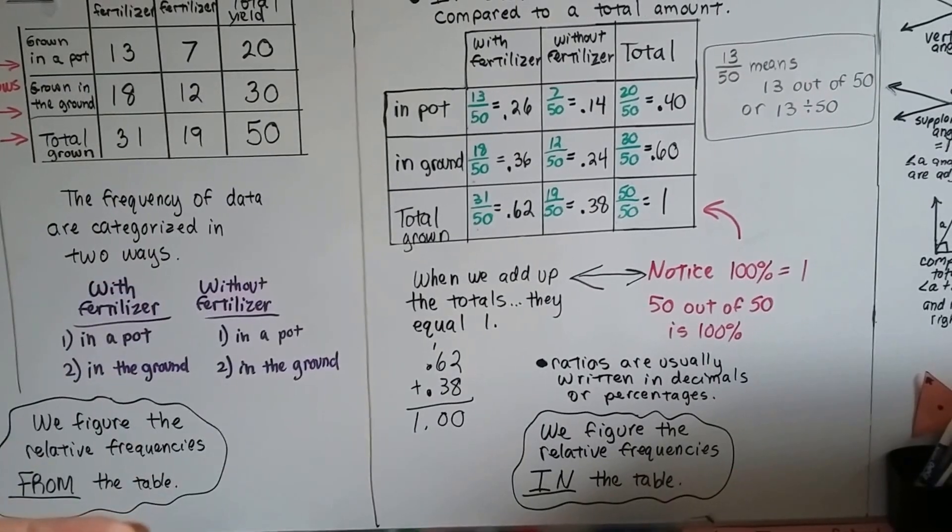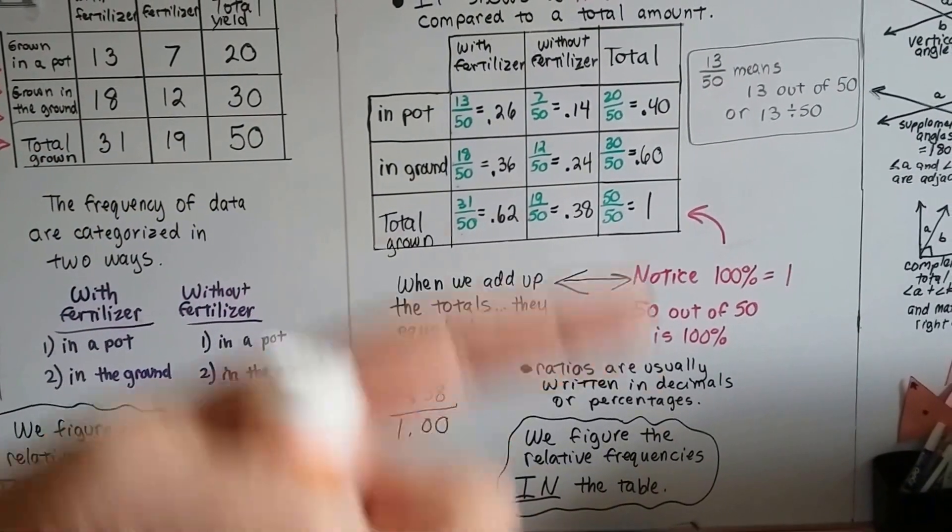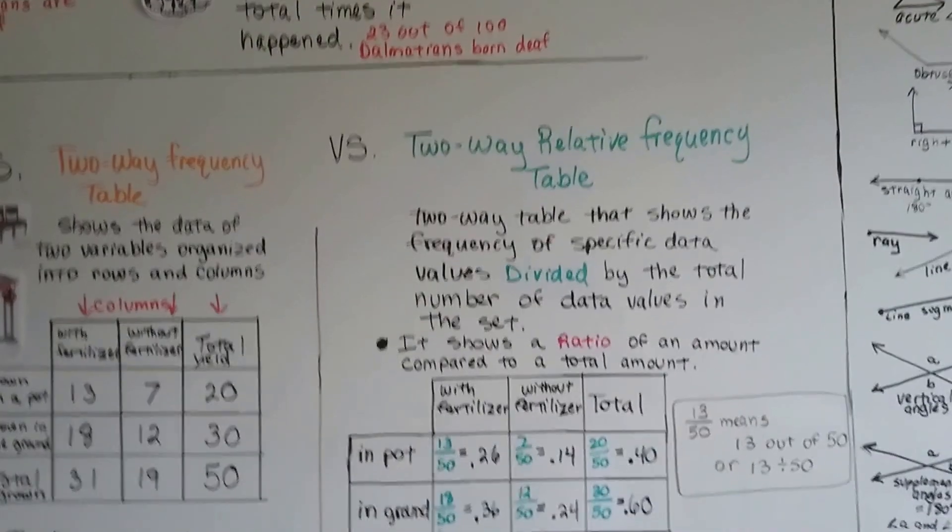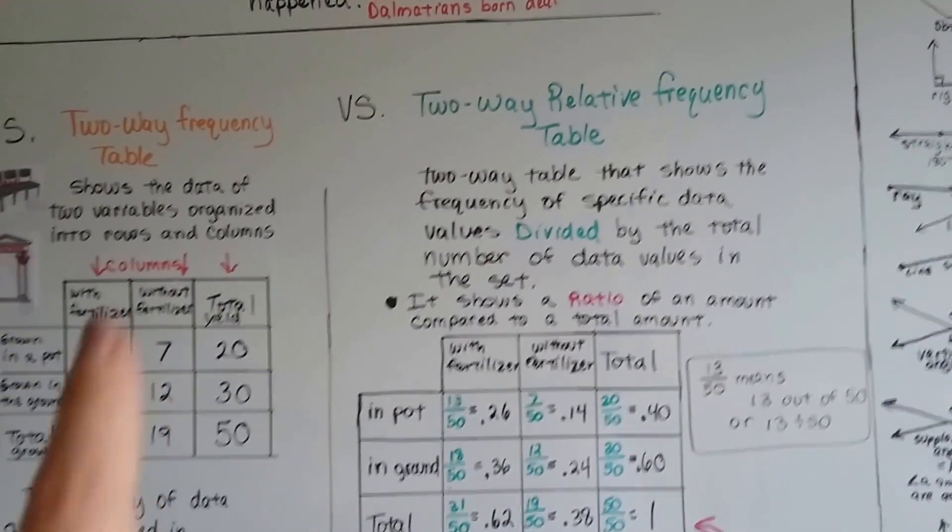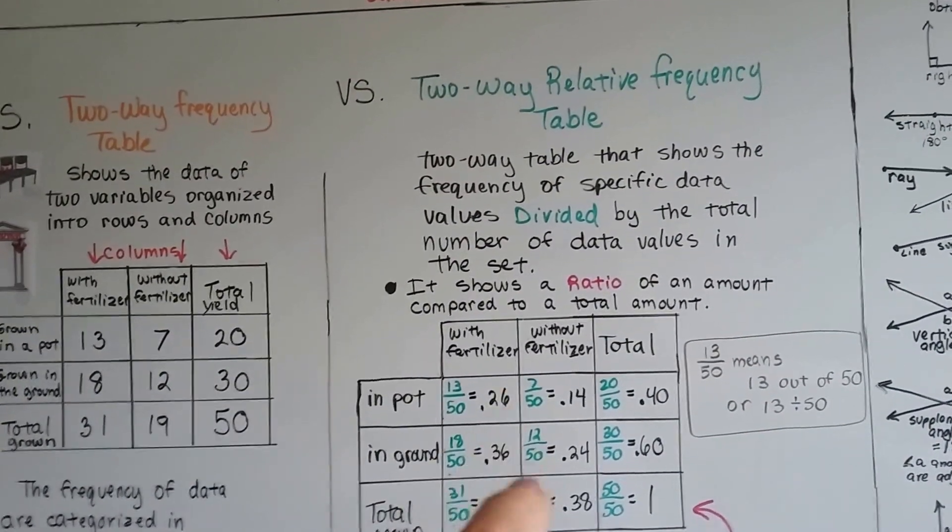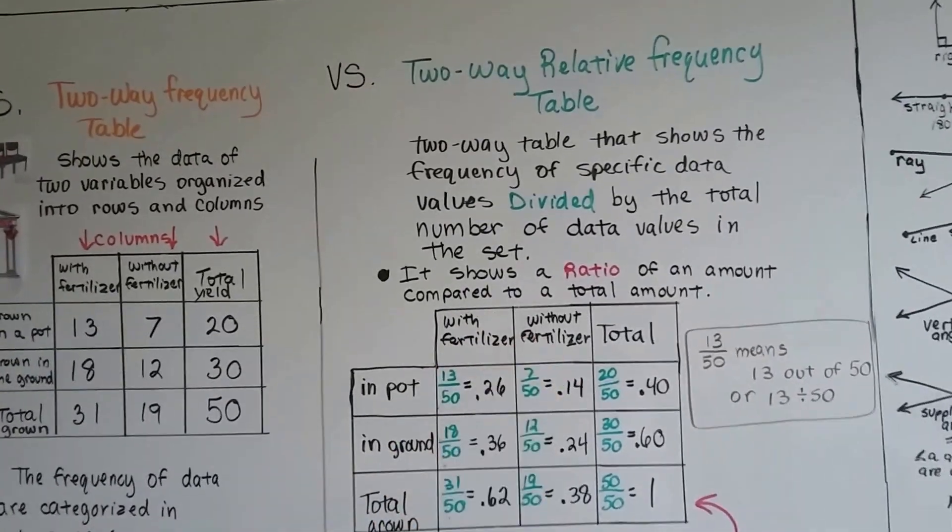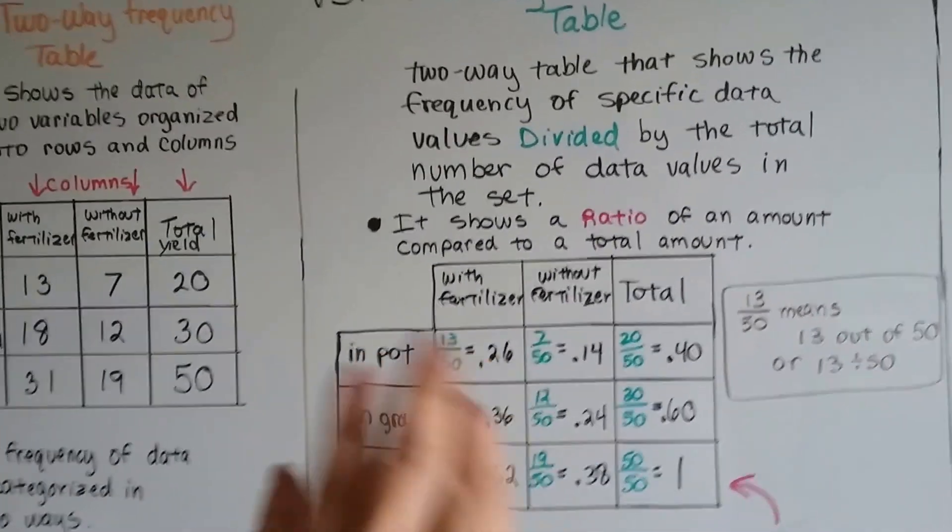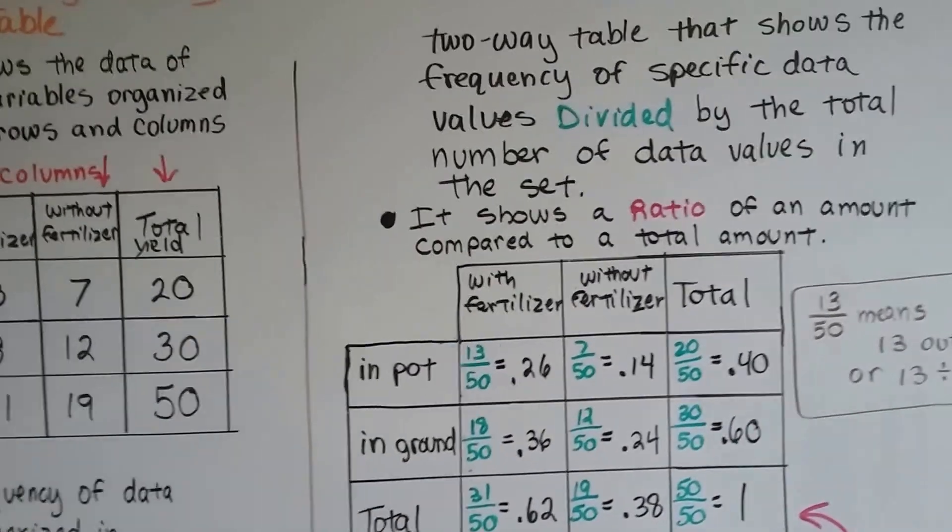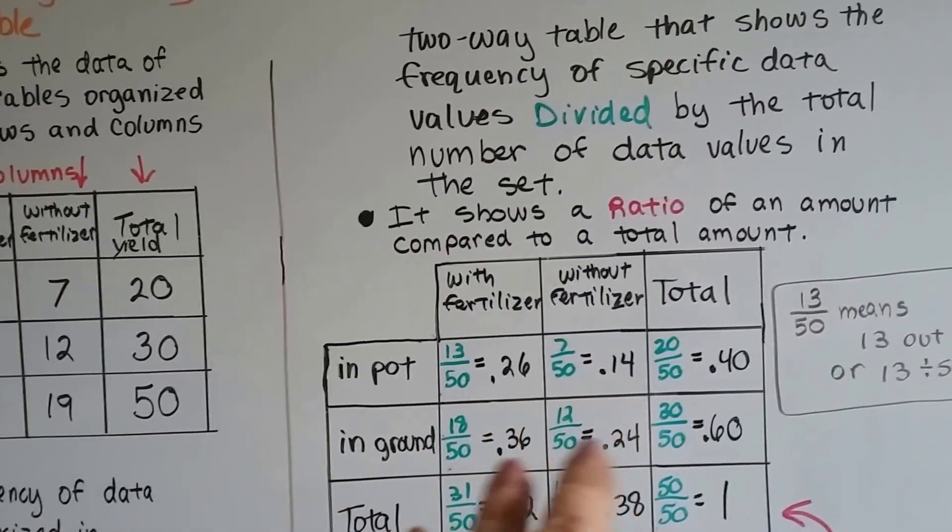See? This one, we got the relative frequencies from this table. This one, we're figuring it right into the table. And that's why it's called a two-way relative frequency table. It's a two-way table just like this one, but the relative frequencies are already figured in it. So we need a little extra room in our box, don't we, to fit these numbers in.